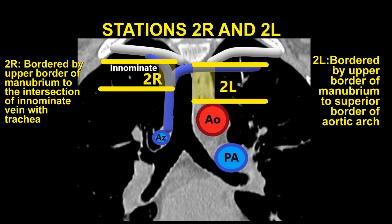Station 2L, the upper left paratracheal node, is bordered by the upper border of the manubrium to the superior aspect of the aortic arch. To visualize this station, the scope is placed in the upper trachea at the level of the 4th and 5th tracheal rings with the probe oriented towards the left lateral wall at the 9 o'clock position.